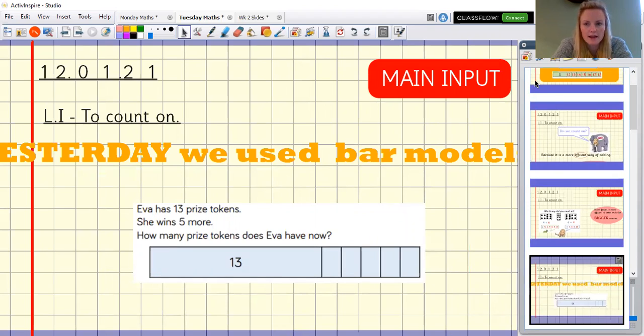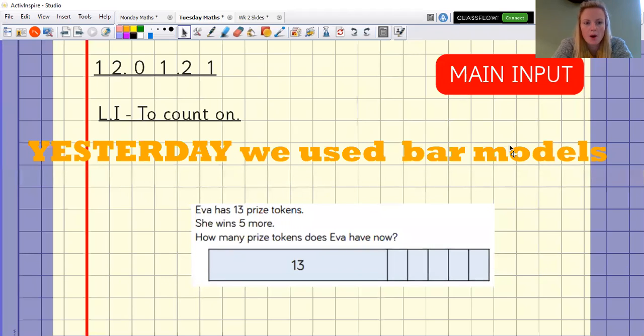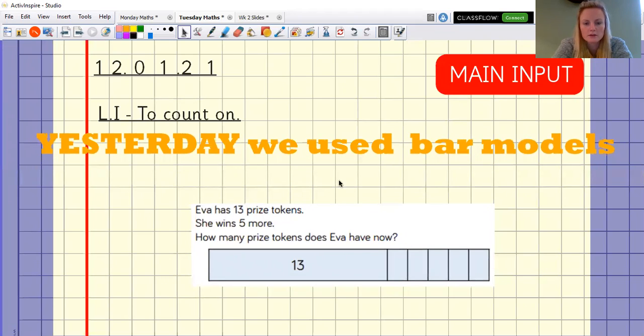So yesterday we use our bar models. So here was an example. I've got Eva has 13 prize tokens. She wins five more. How many prize does Eva have now? So let's do it together.